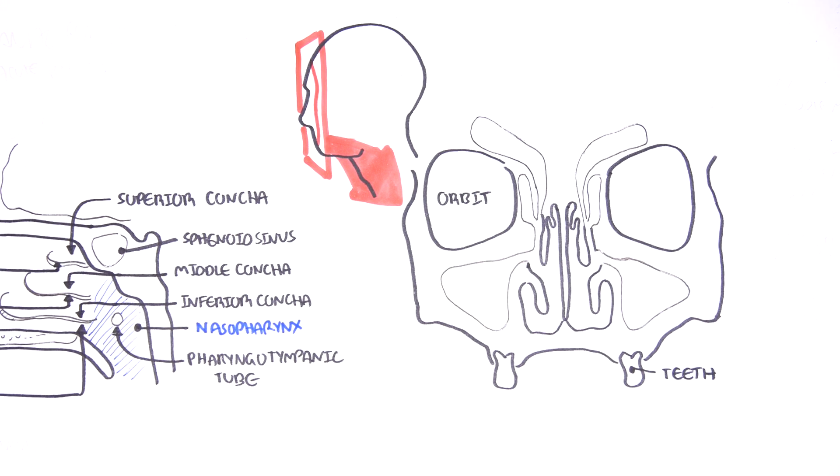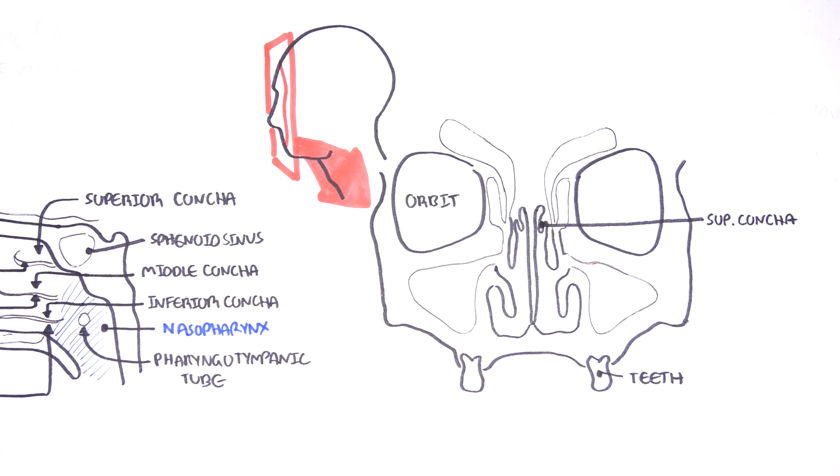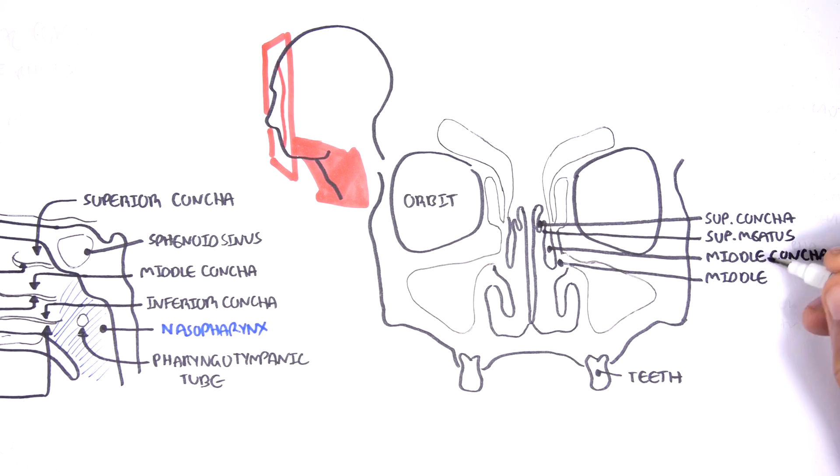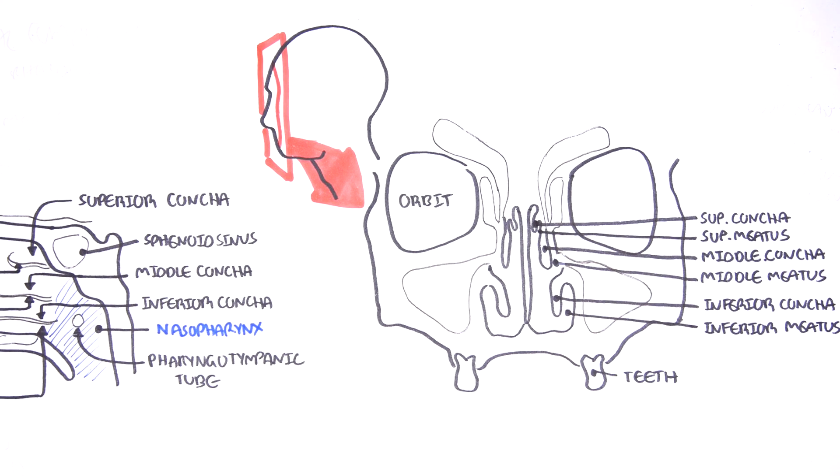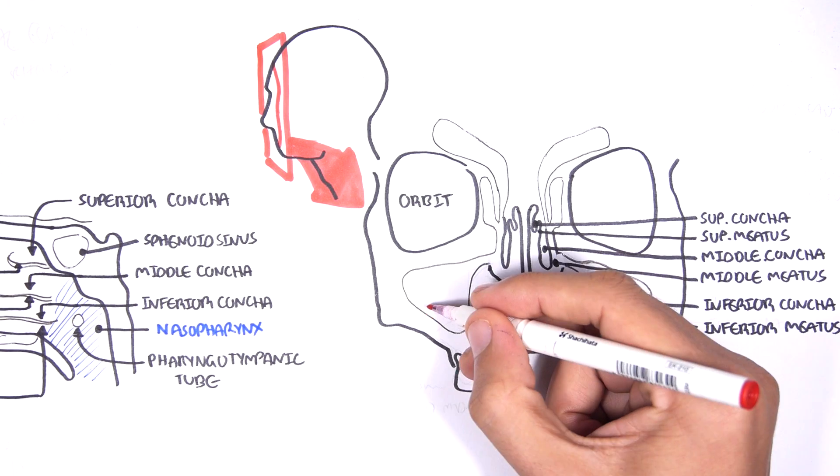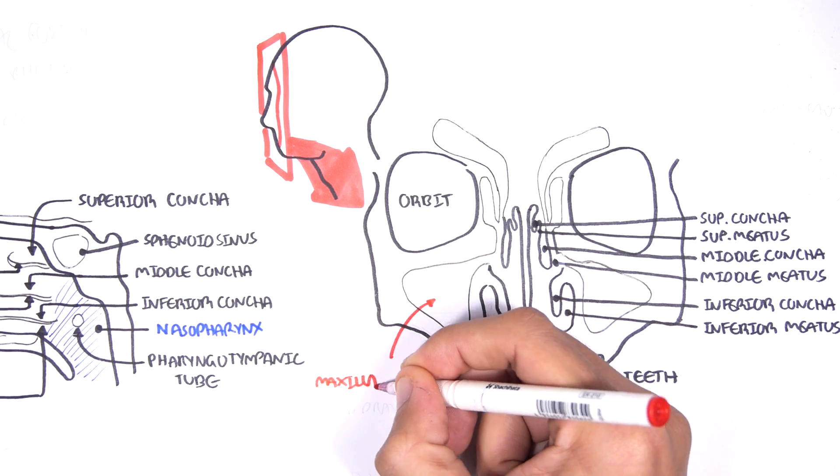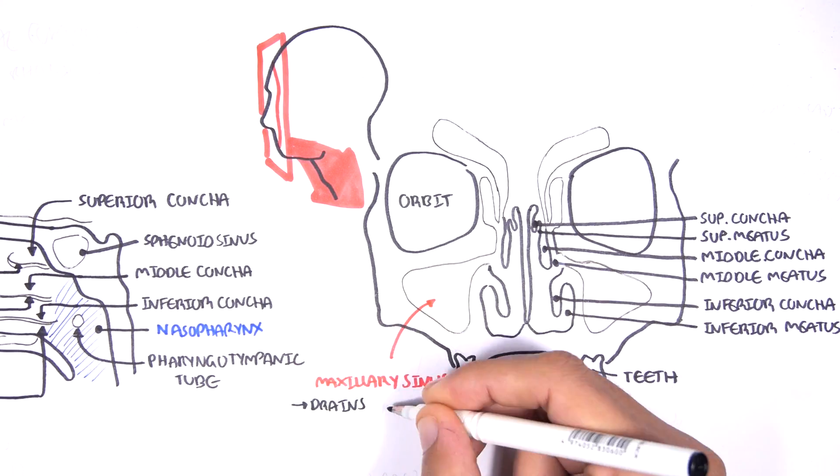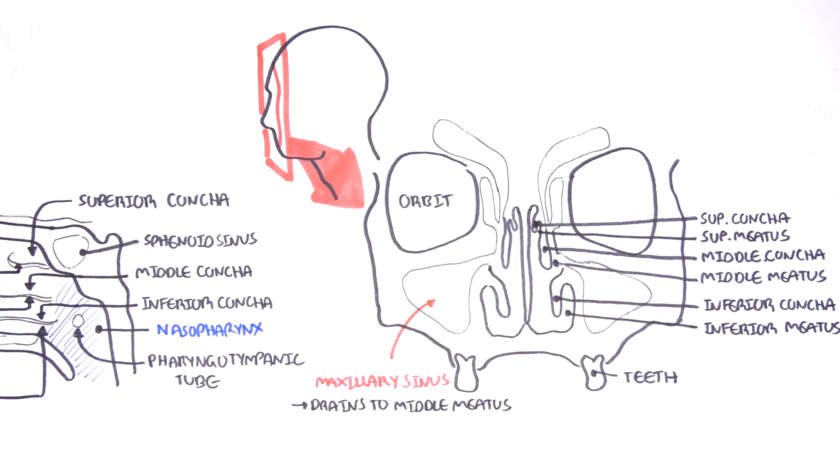This is your superior concha, behind it the superior meatus. This is your middle concha, behind it the middle meatus. Inferior concha, behind it the inferior meatus. Below the orbit and lateral to the nasal cavity are your maxillary sinuses. The maxillary sinus, like the frontal sinus, drains into the middle meatus.